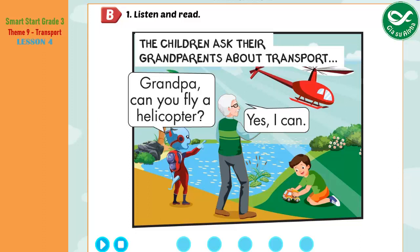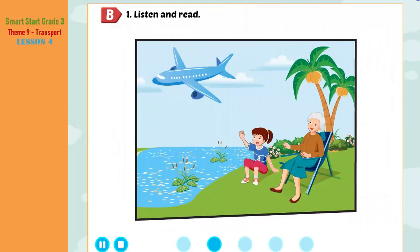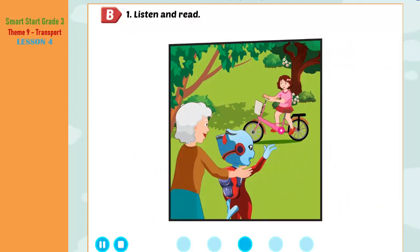B. One. Listen and read. The children ask their grandparents about transport. Hi, Grandpa! Hi, kids! Grandpa, can you fly a helicopter? Yes, I can, Alfie! Grandpa, can you drive a truck? No, I can't, Ben. Hey, Grandma, can you fly a plane? No, I can't, dear. Hi, Jill! Hi, everyone! Grandma Grace, can you ride a bike? Yes, Jill, I can! Here, Alfie, you try!